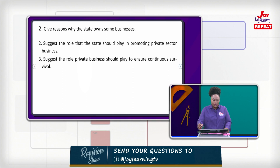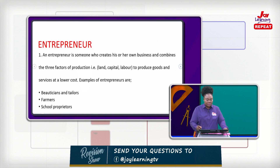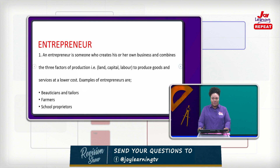Also, suggest the role private businesses should play to ensure continuous survival. Now let's go to Entrepreneur. Who is an Entrepreneur? An Entrepreneur is someone who creates his or her own business and combines the three factors of production — that is, land, capital, and labor — to produce goods and services at lower costs.